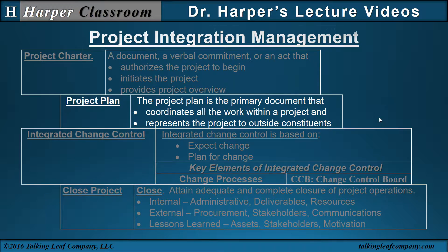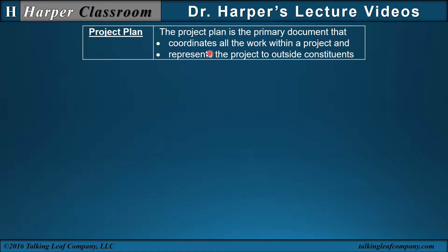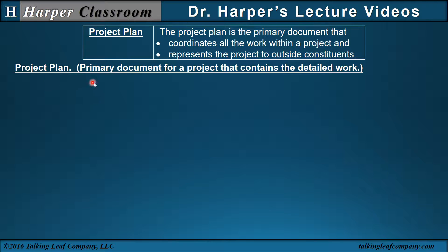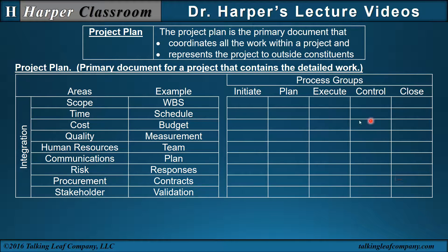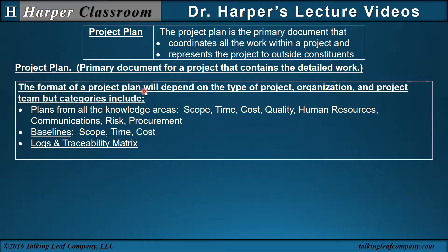The next process is the project plan. The project plan is the primary document that coordinates all the work within a project and represents the project to outside constituents. Not all resources are used on every project — those appropriate for the project are selected by the project manager and project team and go into the project plan. The format depends on the type of project, organization, and project team, but categories include plans from all knowledge areas: scope plan, time plan (schedule), cost plan (budget), quality plan, human resources, communications, risk, and procurement.